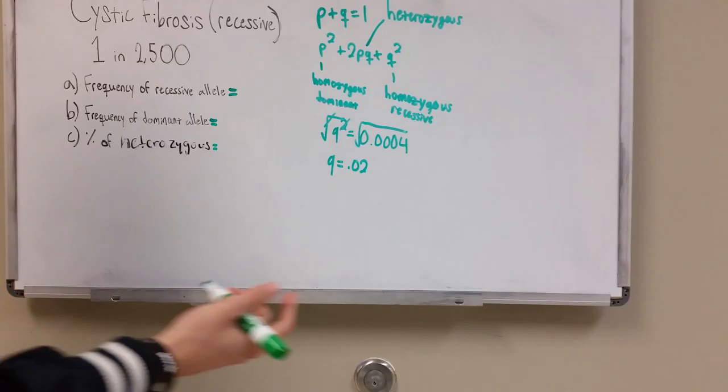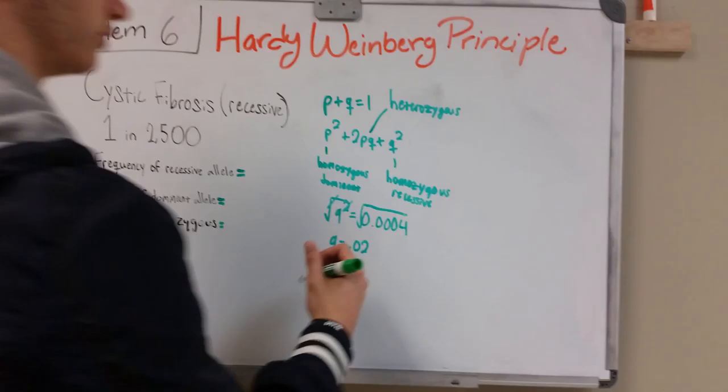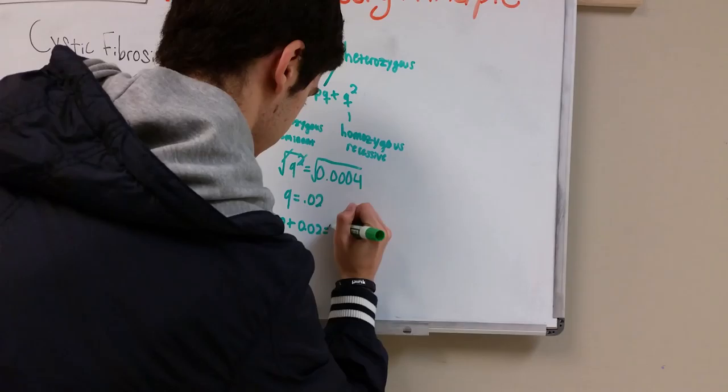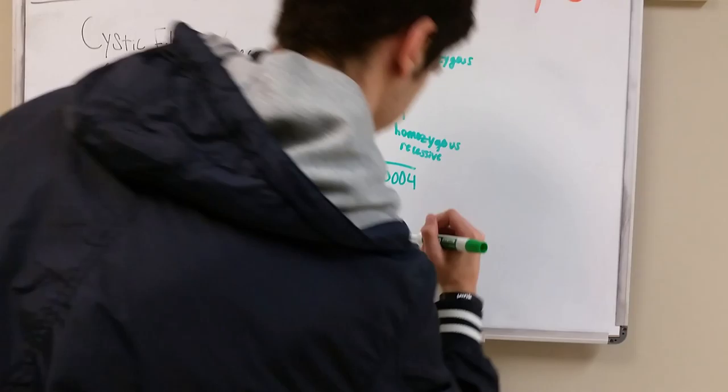So you can assume from this that you'll plug in the recessive allele to the first equation. And 1 minus 0.02 would give you 0.98. So P would equal 0.98.